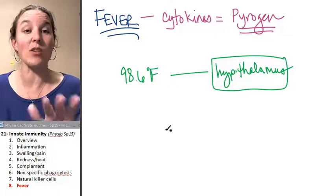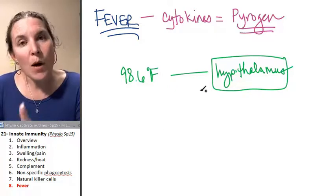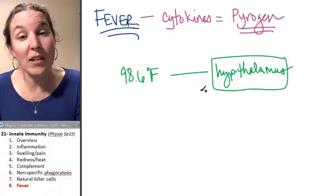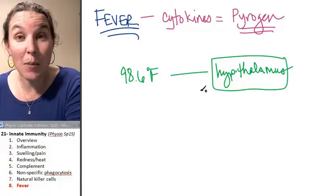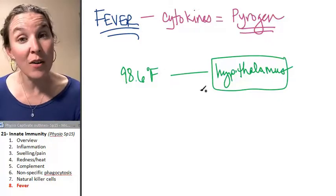The hypothalamus says, okay, cool, we're back to normal again. So some white blood cells, sometimes your white blood cells function better at a higher temperature. So there actually are advantages of fever.